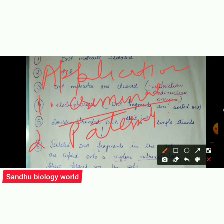Second application: paternity testing. We can use DNA fingerprinting to determine whether a child belongs to particular parents, since a child's DNA will be similar to their parents' DNA. Third application: this technique can also be used to determine the extent of genetic variation in wild animals.